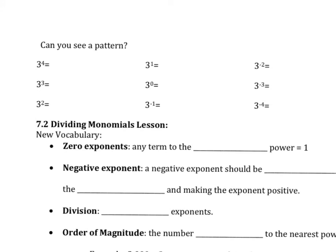Alright, so welcome back. We are going to take a look at a pattern we have with exponents so we can learn more about how we are going to divide monomials. So for our first one we have 3 to the 4th, which is 81. 3 to the 3rd is 3 times 3 times 3, which is 27. 3 squared is 3 times 3, which gives us 9. Our next row we have 3 to the 1st, which is just 3. We can already see that the pattern is the numbers are getting smaller. So what happens when we have 3 to the 0 power?